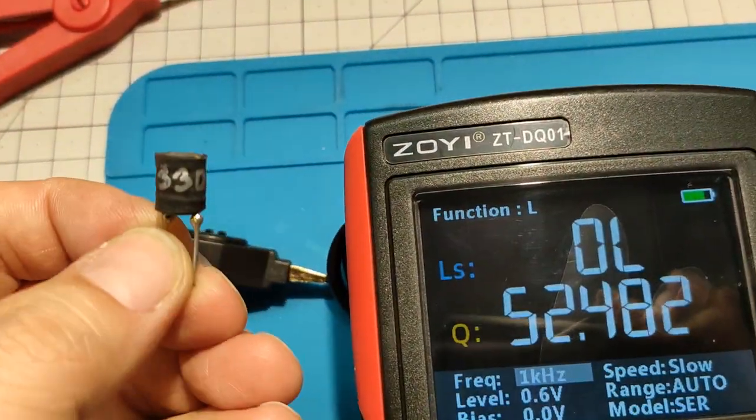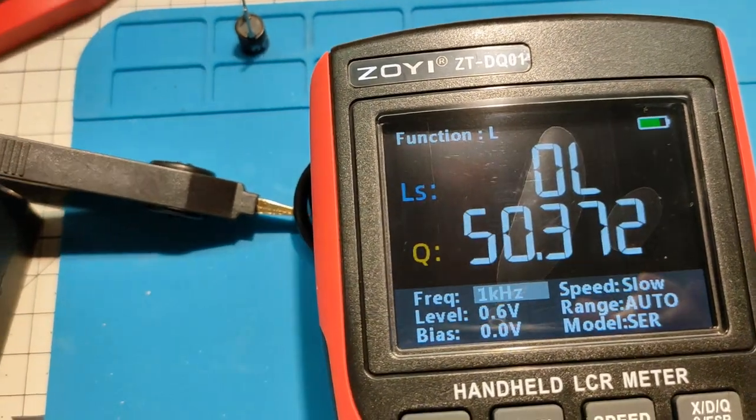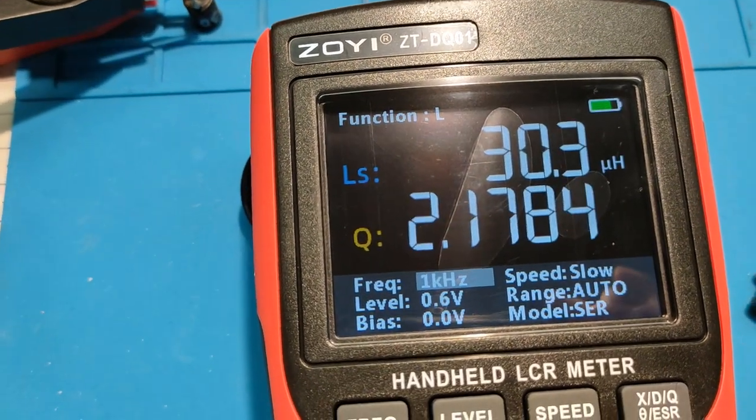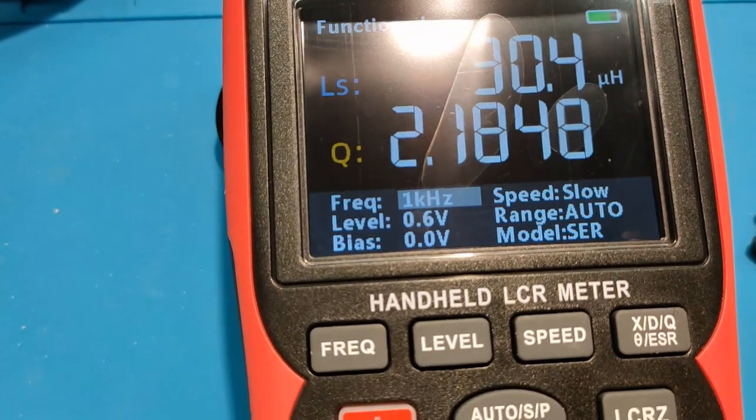This is 10 times smaller. No, not 10 times. It's supposed to be 33. It's 30 microhenry.